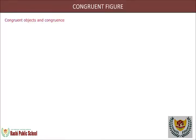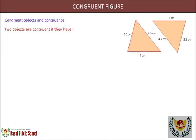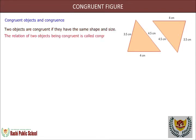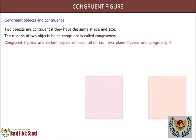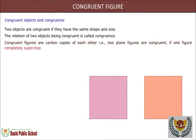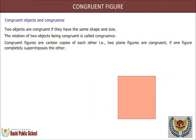Two objects are congruent if they have the same shape and size. The relation of two objects being congruent is called congruence. Congruent figures are carbon copies of each other — that is, two plane figures are congruent if one figure completely superimposes the other. The symbol of congruence is read as 'is congruent to.'